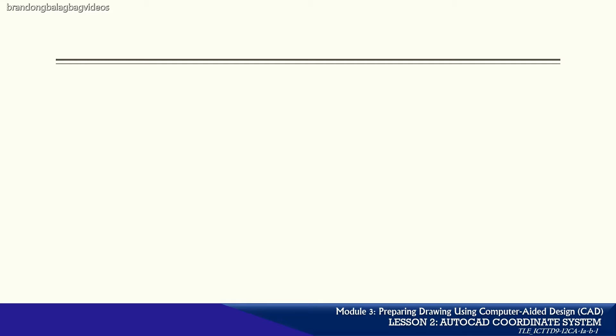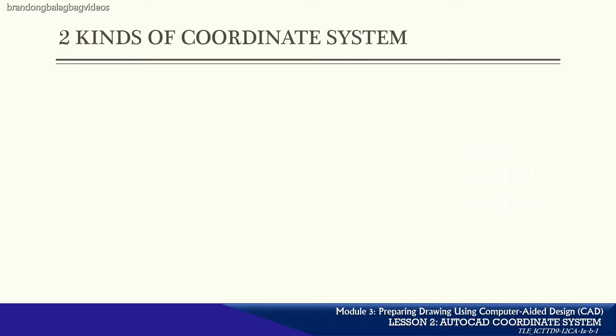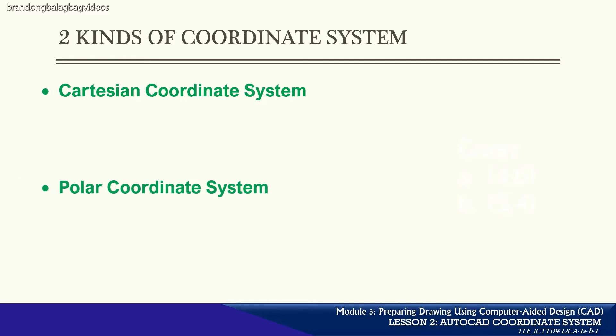Working with AutoCAD is equal to working with a set of points or coordinates. There are actually two kinds of coordinate systems: the Cartesian coordinate system and the Polar coordinate system.